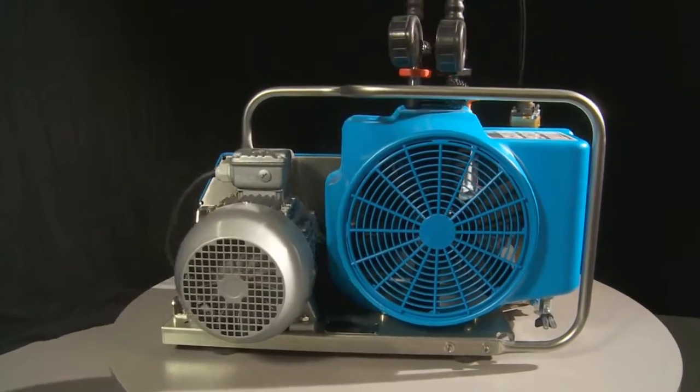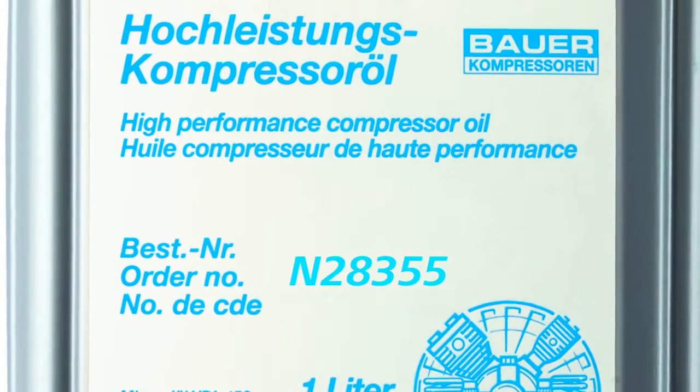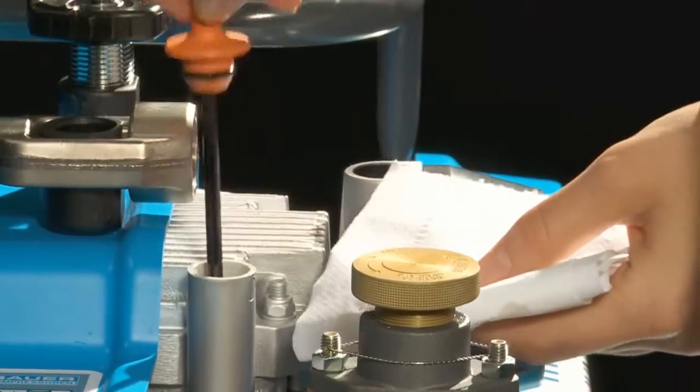Bauer compressors run on genuine Bauer lubricant, which allows 2000 running hours prior to the next oil change. Comparable compressors already require an oil change after 50 running hours.